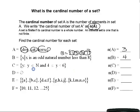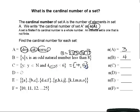Set C is the set of all y such that y is a natural number and 4 ≤ y < 6. That means all natural numbers starting at and including 4, up to but not including 6, which gives us 4 and 5 — two elements — so the cardinal number is 2. Set D is the empty set, written as braces with nothing inside. It has 0 elements, so its cardinal number is 0.